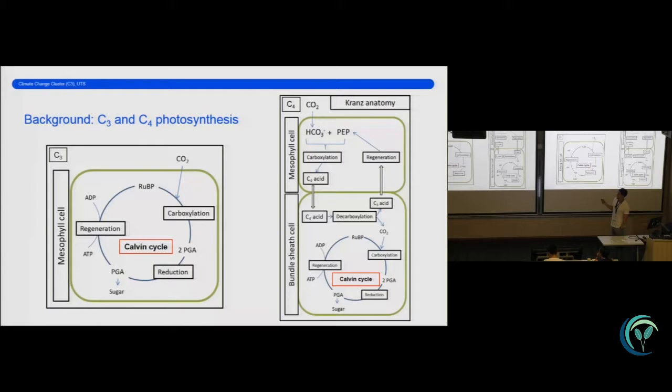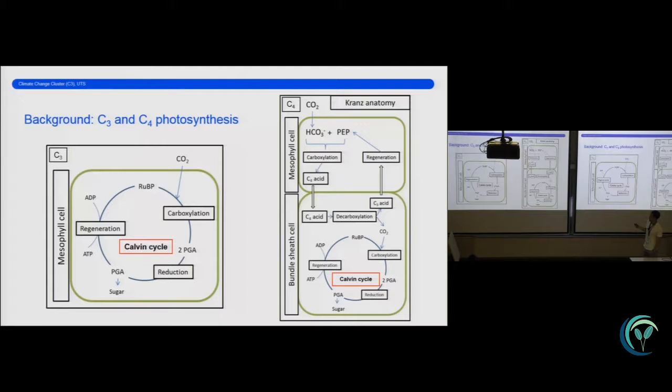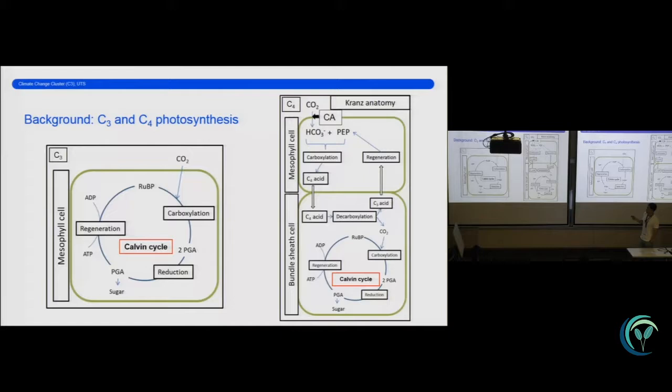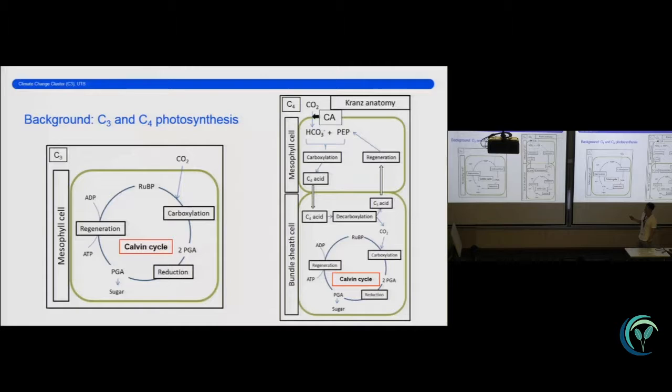The schematic on the right is a C4 model. So in this case, carbon dioxide diffuses into the mesophyll cell. However, it is converted to bicarbonate via the enzyme carbonic anhydrase. This bicarbonate is then able to carboxylate phosphoenolpyruvate via the enzyme phosphoenolpyruvate carboxylase, producing a four-carbon molecule, hence the name C4, which is then transported into the bundle sheath cell.